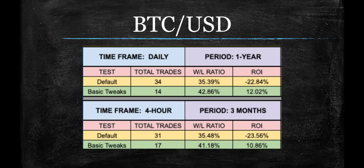Let's hit Bitcoin real quick — very interesting. This indicator on its own does not like Bitcoin, which is strange, because as we talked about in the trading crypto video, Bitcoin trends very well. But you can tweak it very easily to flip it into a positive. These are pretty low numbers on the default setting, but just goes to show that a little bit of work, which oftentimes decreases the amount of trades you make, does go a long way.